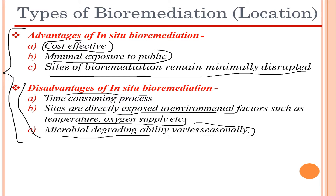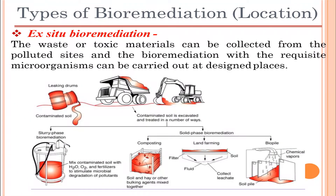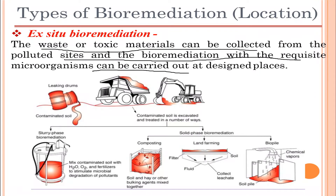Moving on, we will now start with ex-situ bioremediation. In ex-situ bioremediation, the waste or toxic material can be collected from polluted sites and bioremediation with the requisite microorganisms is carried out at designated places. The key difference is that bioremediation does not take place at the site of contamination — the contaminated material is picked up and taken to another location for treatment, mainly in bioreactors.